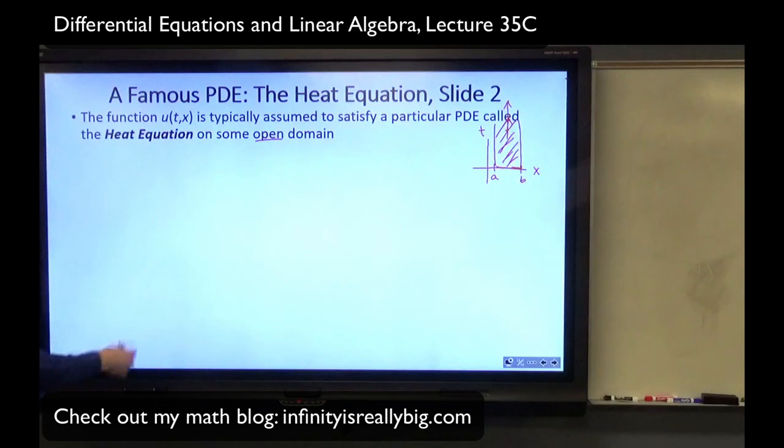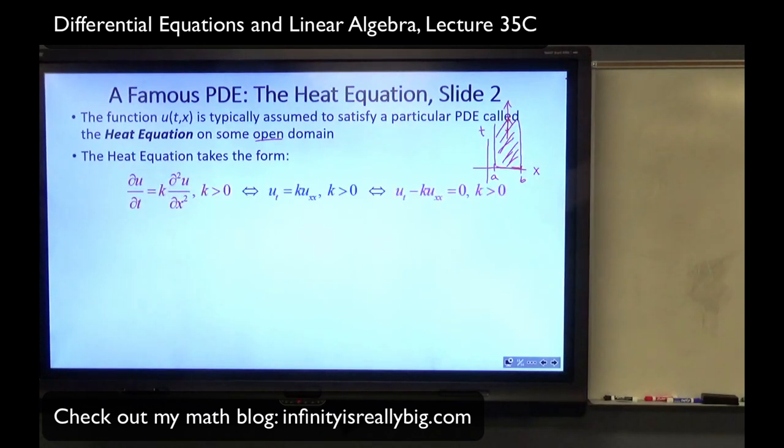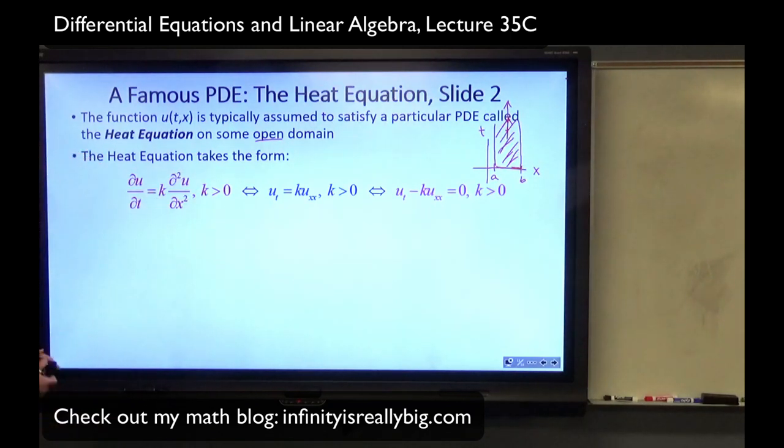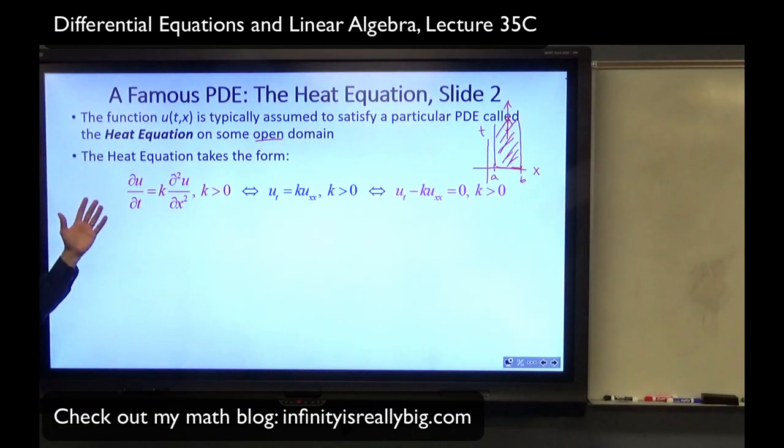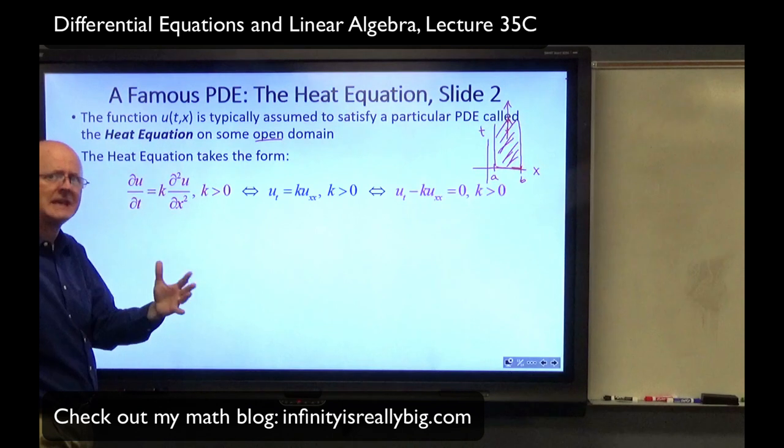Along the boundary, it's going to be defined, but it's got to satisfy boundary conditions. It takes this form, and K is positive here. The partial derivative of U with respect to T, this curvy D means partial derivative. It's first order partial with respect to T equals some constant K times the second order partial of U with respect to the X variable. T is time, X is position. This is a rate of change of the temperature over time, and this is related to the concavity of the initial distribution of heat or temperature.